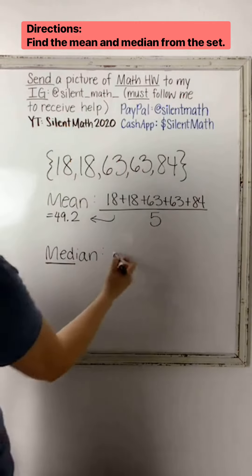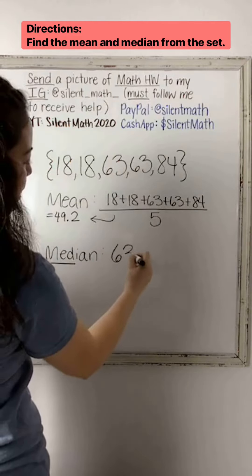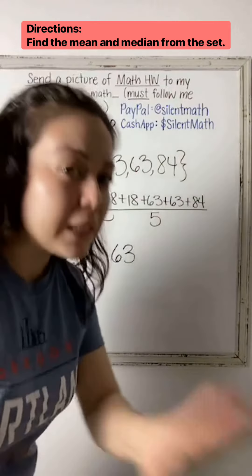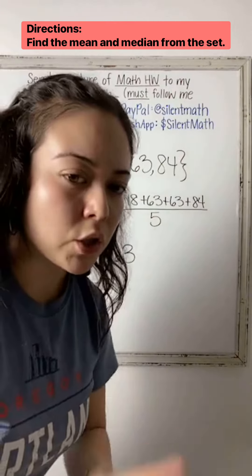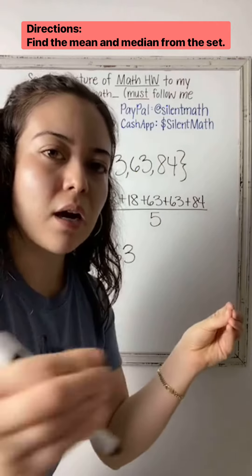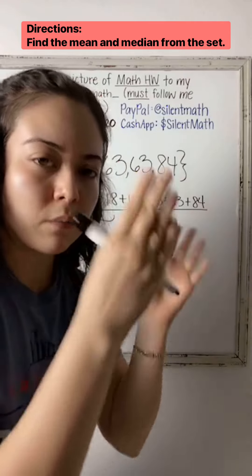So the median of this set is going to be 63. It's as easy as that. Median is so simple—median, middle, the middle term. But only if your values in your set are written in order from least to greatest.